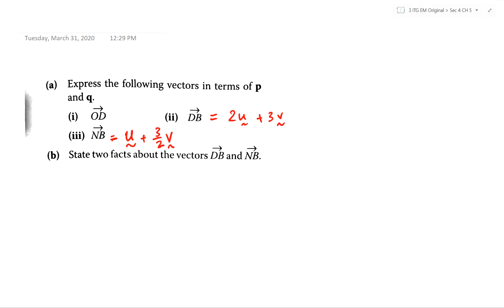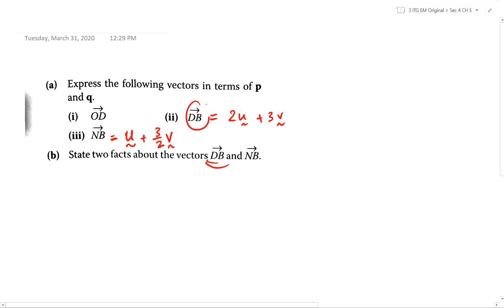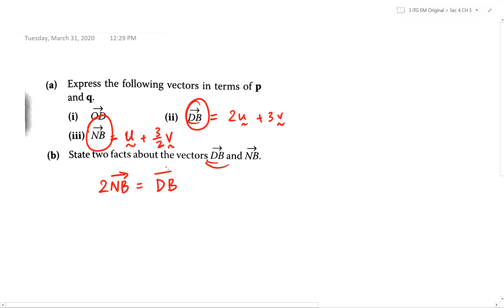At this point, how should we approach part B? This is the standard approach — I've seen varying presentations from your work, and many of them are not very suitable. You're not answering the question properly. Before anything else, I need to state the relationship between DB and NB — I need an equation: one in terms of the other. So: 2NB equals DB.